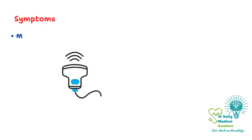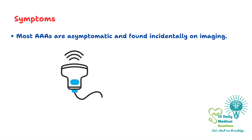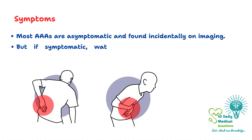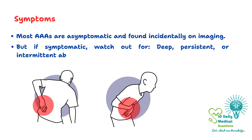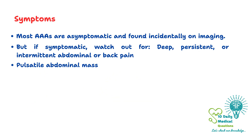Clinically, most AAAs remain asymptomatic and are often discovered incidentally on imaging done for other reasons. However, if symptoms do occur, they may present as vague or deep chronic abdominal or back pain. On physical examination, a pulsatile abdominal mass may be palpable.